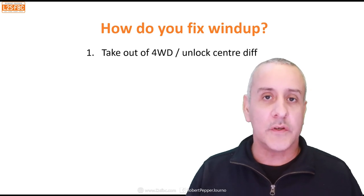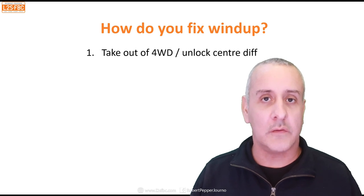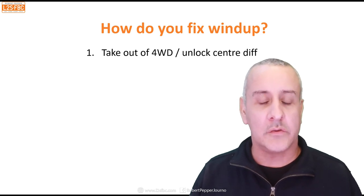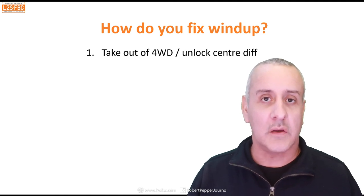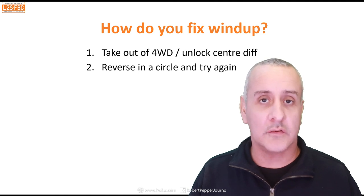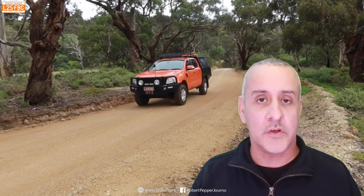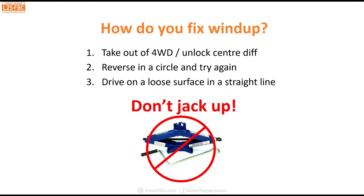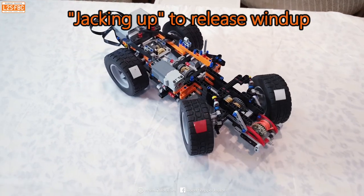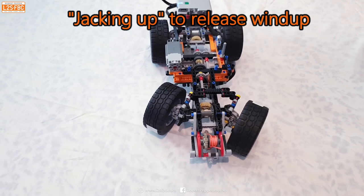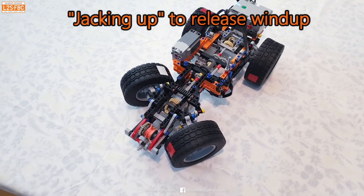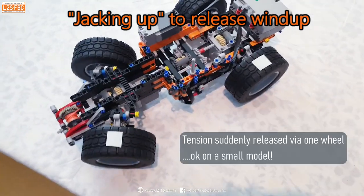How do you fix wind-up? First, try taking the vehicle out of four-wheel drive or unlocking the centre diff. If all the play is taken up in the transmission and joints, that won't be possible, so try reversing in a circle and attempt again. You can also drive on a loose surface — even in a straight line — which should allow the front and rear wheels to turn at different speeds and relieve the wind-up. What we don't recommend is jacking a vehicle up, because that can cause a sudden release of tension which can be dangerous — as the model demonstrates when just one wheel is lifted, all the stress releases violently through that wheel.